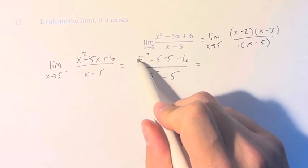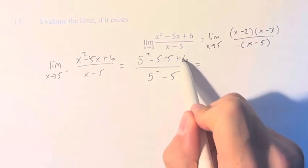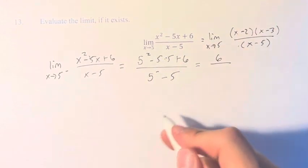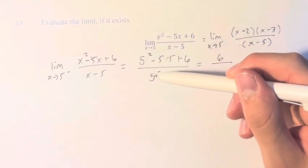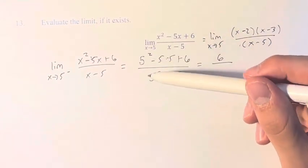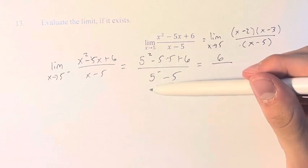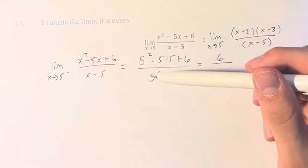25 minus 25 is 0. So this is 0 plus 6, which is just 6. What's more interesting is on the bottom, we have approaching 5 from the left. What does that mean? That means we have numbers that are very, very slightly less than 5, but approaching 5.